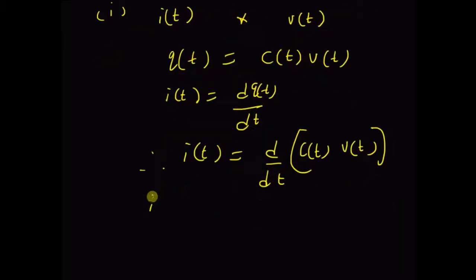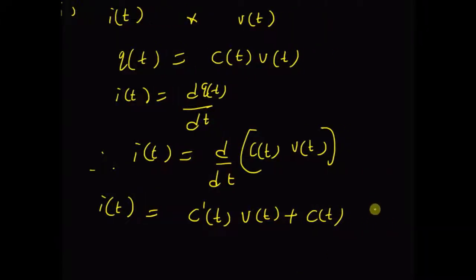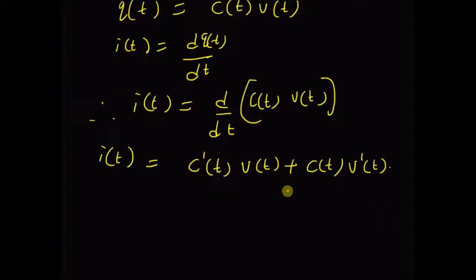Hence, the current in a time-varying capacitor is equal to the derivative of C(t), that is C'(t), times v(t), plus C(t) times the derivative of the input voltage, that is v'(t). Thus, for the time-varying capacitor, the current i(t) is given by the sum of these two products.